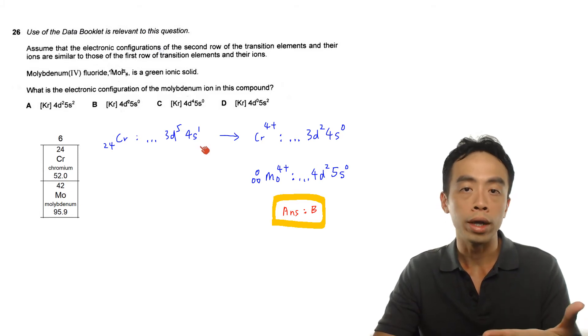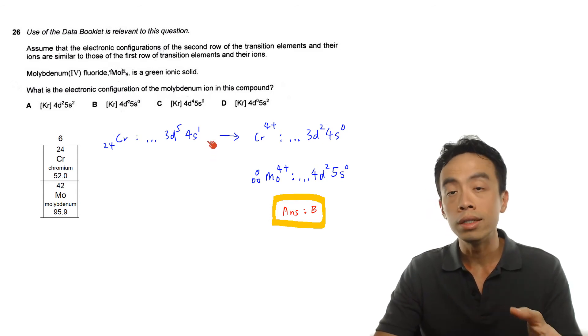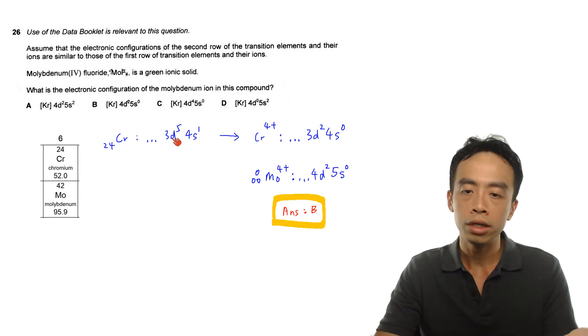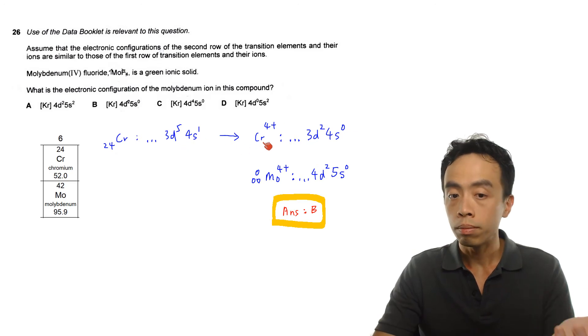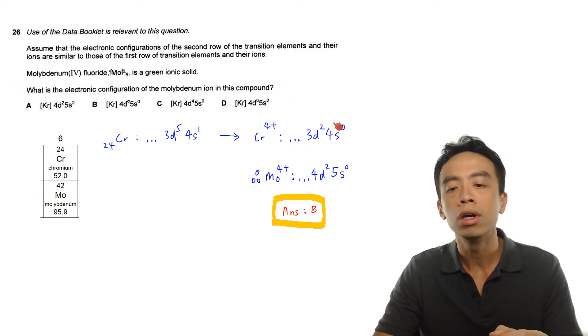Because 4s subshell, when it is filled, will be further away from the nucleus and less stable. So therefore it is easier to remove the electrons from 4s, then the remaining 3 electrons I will remove from the 3d subshell. So chromium 4+, electronic configuration, if again I focus on the valence shell, should be 3d2 4s0.